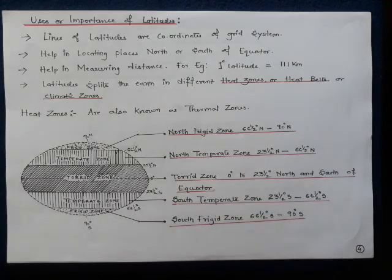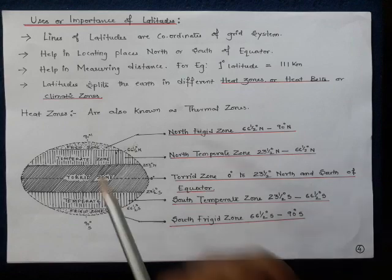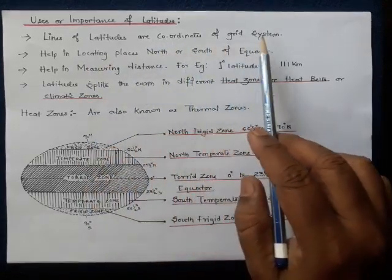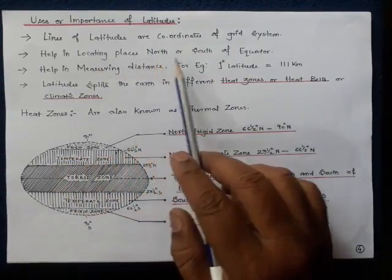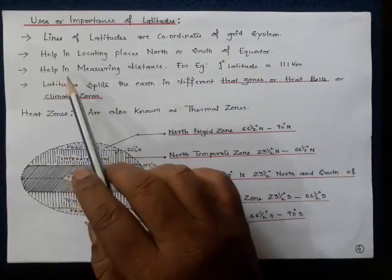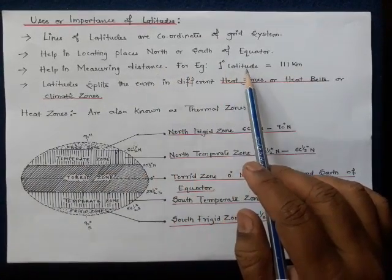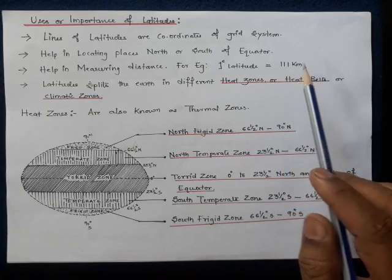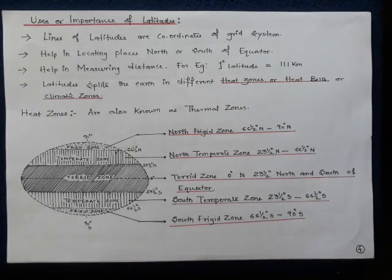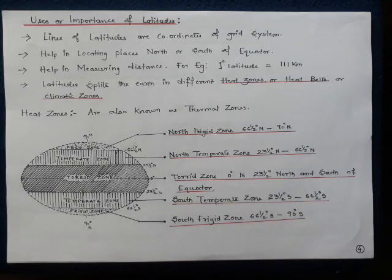There can also be a question asking about the importance of latitudes. Lines of latitudes are the coordinates of the grid system. They help in locating places north or south of the equator, and help in measuring distance — for example, one degree of latitude equals 111 kilometers, so the difference between two latitudes can be 111 or 222 kilometers. Importantly, latitudes divide the earth into different heat zones, heat belts, or climatic zones.